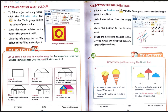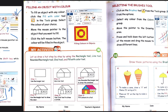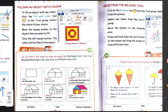Now today we are going to learn about some other tools. The first one is filling an object with color — you can fill your color in objects. The next one is the brushes tool. With the help of brushes, you can draw from the first point and fill your color in your objects.